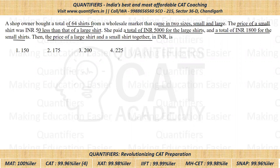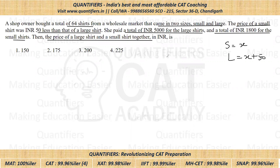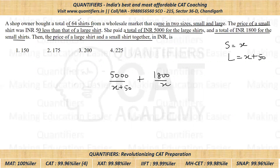So first of all, let us consider the price of a small shirt as X. So the price of a large shirt would become X plus 50. It is given she paid a total of 5,000 for large shirts, so the number of large shirts would be 5,000 divided by (X plus 50), and the number of small shirts would be 1,800 divided by X. Now these total number of shirts is also given to us as 64.